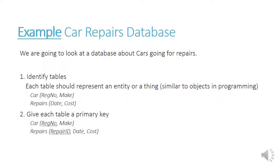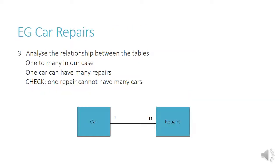Step two, we give each table a primary key. In the car table it's the registration number, and in the repairs table it's the repair ID. We've added that field in as there was no field you could use to identify each record uniquely — either by the date or the cost. Step three, analyze the relationship between the tables. In our case it's one-to-many because one car can have many repairs. Can one repair involve many cars? No, it cannot. So it is definitely one-to-many.